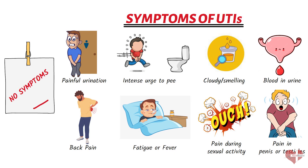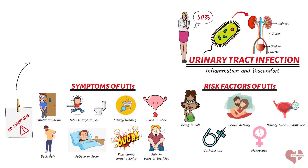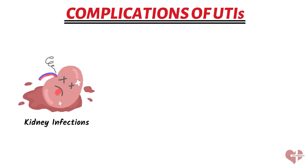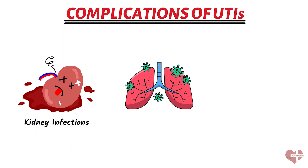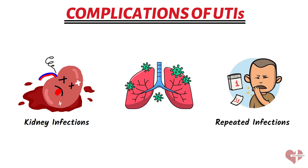Not everyone with a UTI will experience all of these symptoms, and some people may not experience any symptoms at all. Symptoms can vary in severity, and in some cases a UTI can lead to serious complications. Untreated UTIs can spread to the kidneys, leading to more serious infections that can cause permanent damage. In severe cases, UTIs can lead to sepsis, a potentially life-threatening condition. Untreated or incompletely treated UTIs can also lead to recurring infections that are more difficult to treat. It's important to seek treatment as soon as possible.